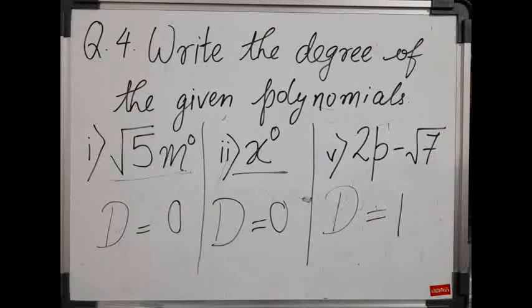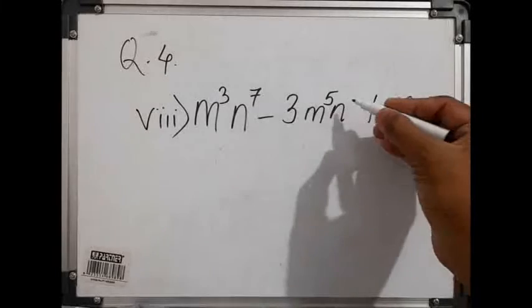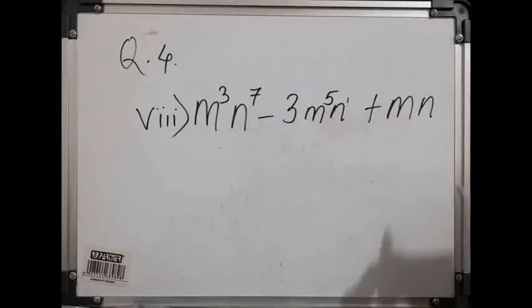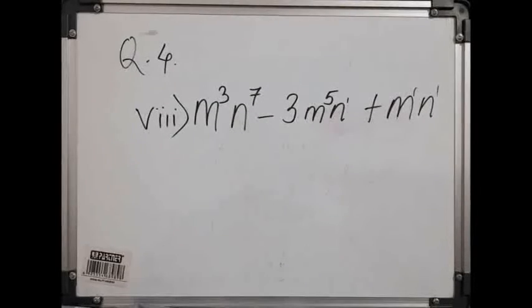Moving on to the next problem. The next problem, we have taken question number 8: m raised to 3, n raised to 7, minus 3 m raised to 5 n. The number is not written but it is understood that here it is n raised to 1, plus m, that is m raised to 1, and n, that is n raised to 1.